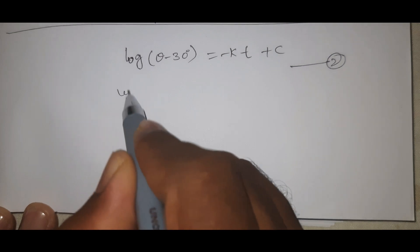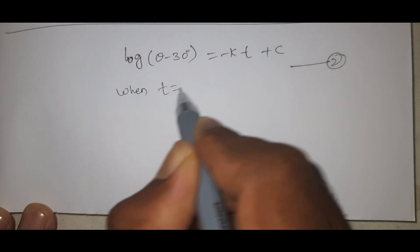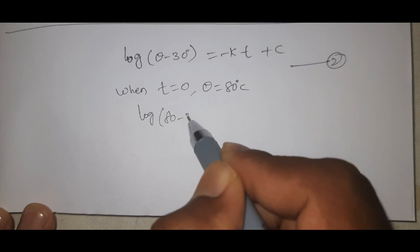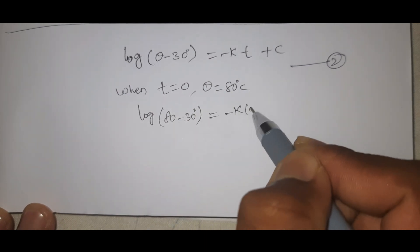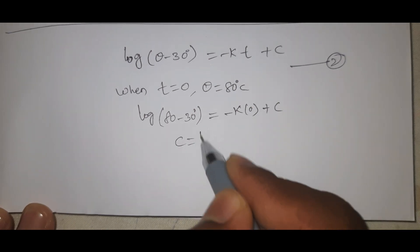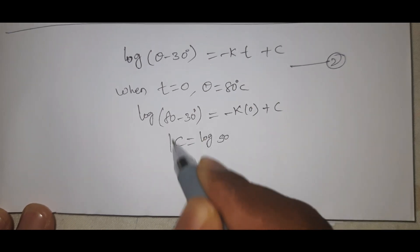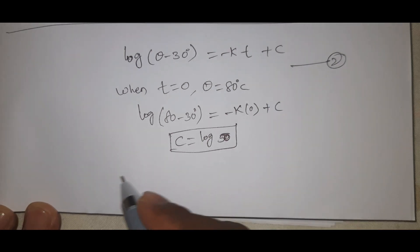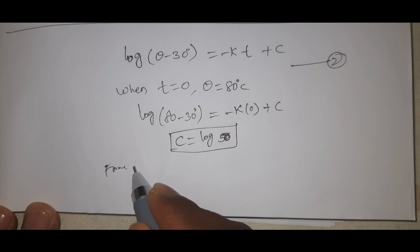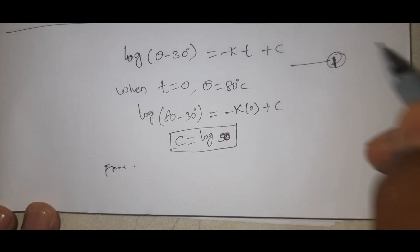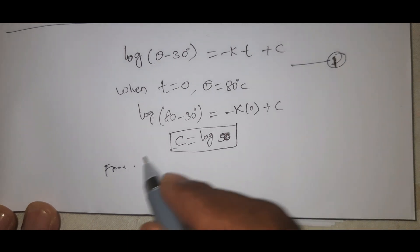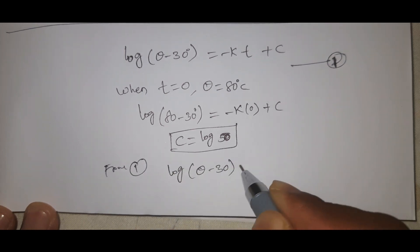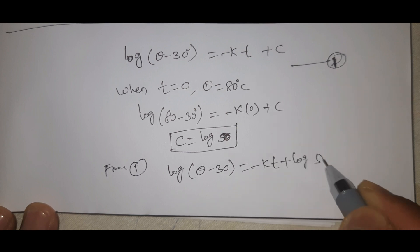This is equation number 2. From equation number 2, when t equal to 0, theta equal to 80 degrees centigrade. So log of 80 minus 30 equals minus k into 0 plus C, giving C equal to log 50. Substituting C equal to log 50 back, we get: log theta minus 30 equal to minus kt plus log 50.